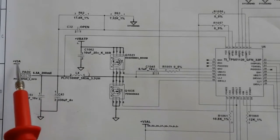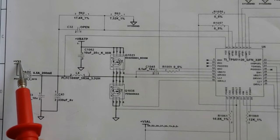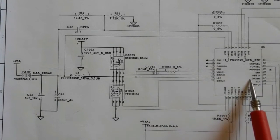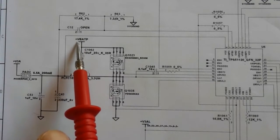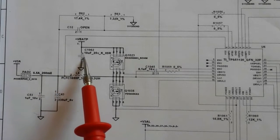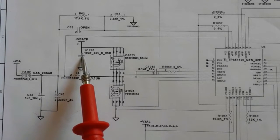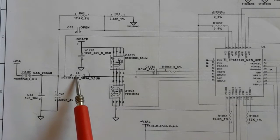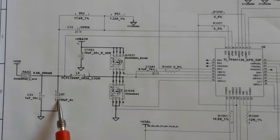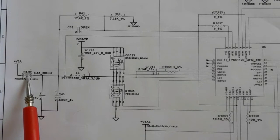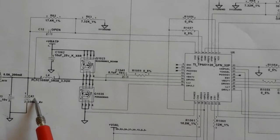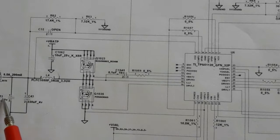Now let's look at the three-volt channel. We always have the power management IC, two MOSFETs, VBAT as the main voltage, a filtering capacitor, inductor L4, and two output capacitors to get a pure three-volt output. Here we have the test pad for this channel.